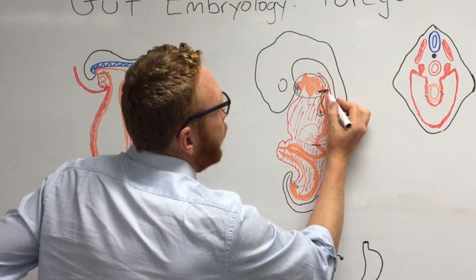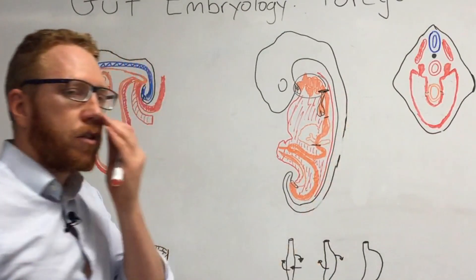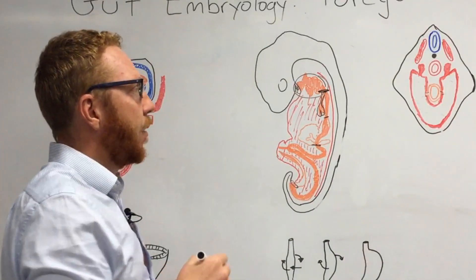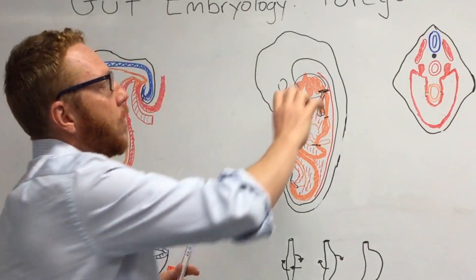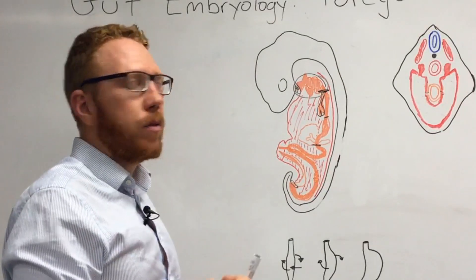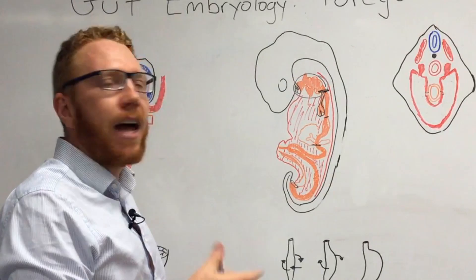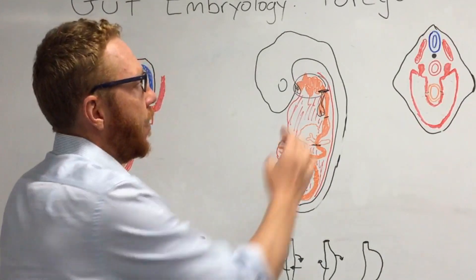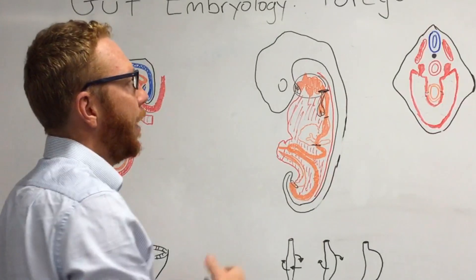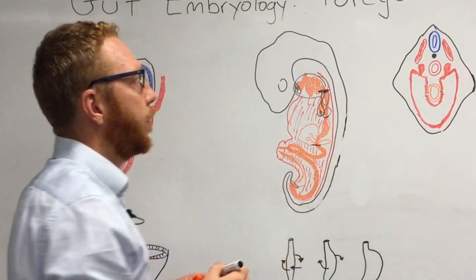From the liver bud diverticulum up to the lung bud area is the esophagus — about 25 centimeters in length. The first third is skeletal muscle, innervated by the vagus nerve from the fourth to sixth pharyngeal arches. The bottom two thirds is smooth muscle, innervated by the splanchnic plexus — a difference in the way it develops.